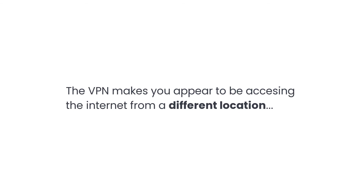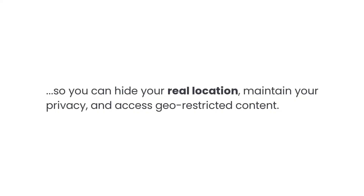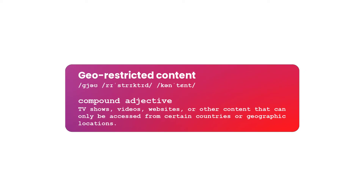The VPN also makes you appear to be accessing the internet from a different location. This is useful as it hides your real location and allows you to access geo-restricted content. For example, you're based in the US but you've heard about a must-see program that's available only in the UK — use the VPN to change your location and view the program.